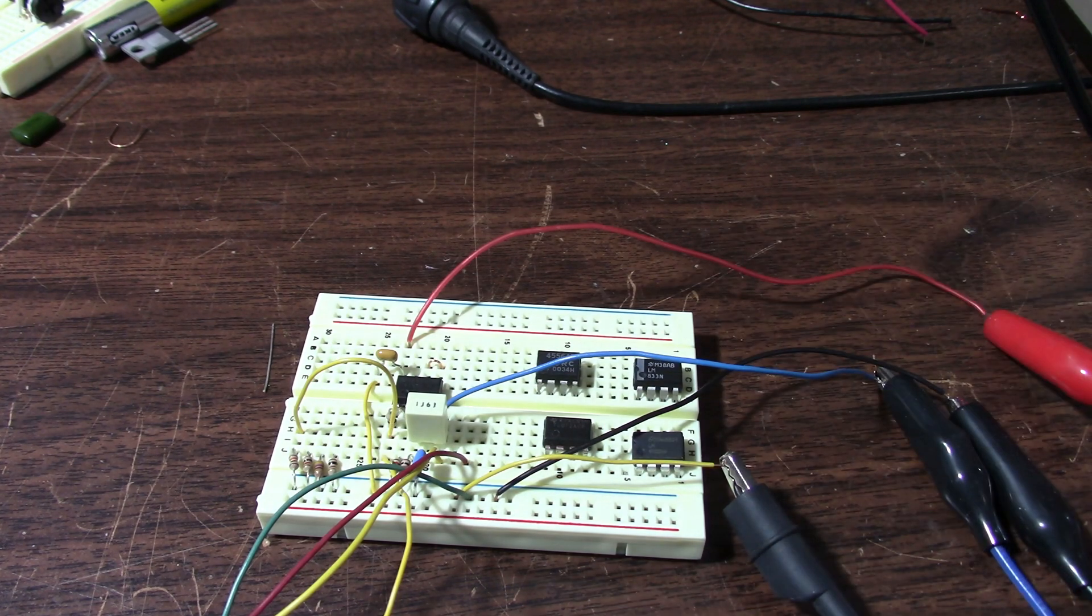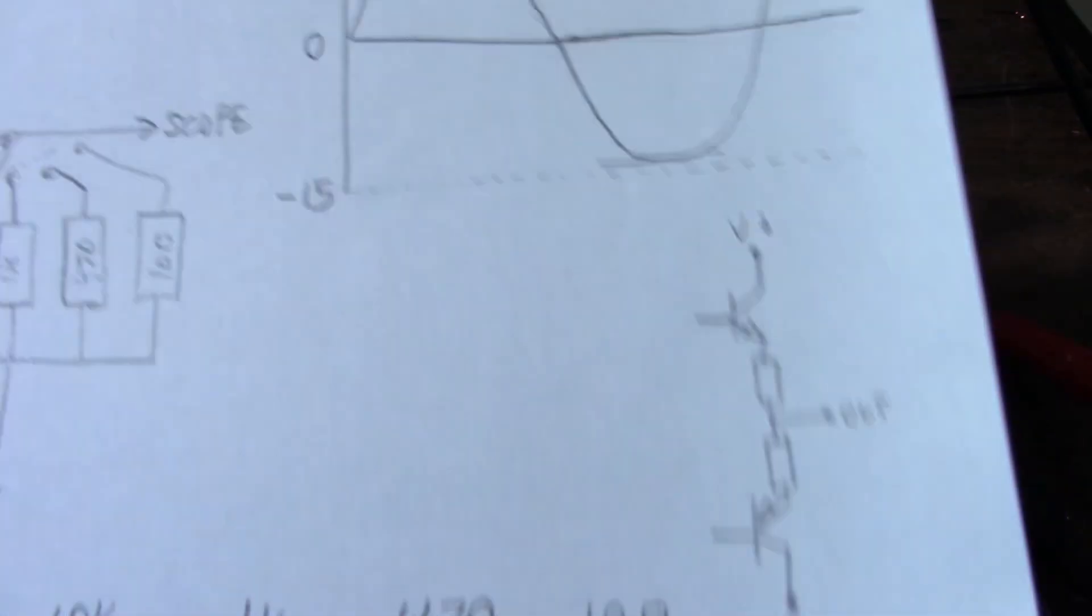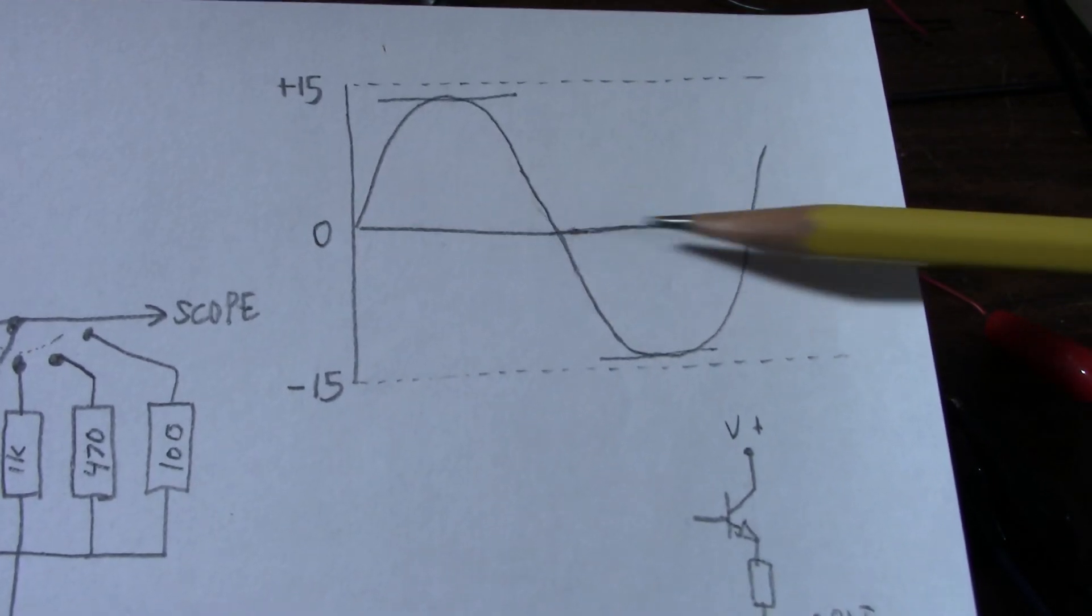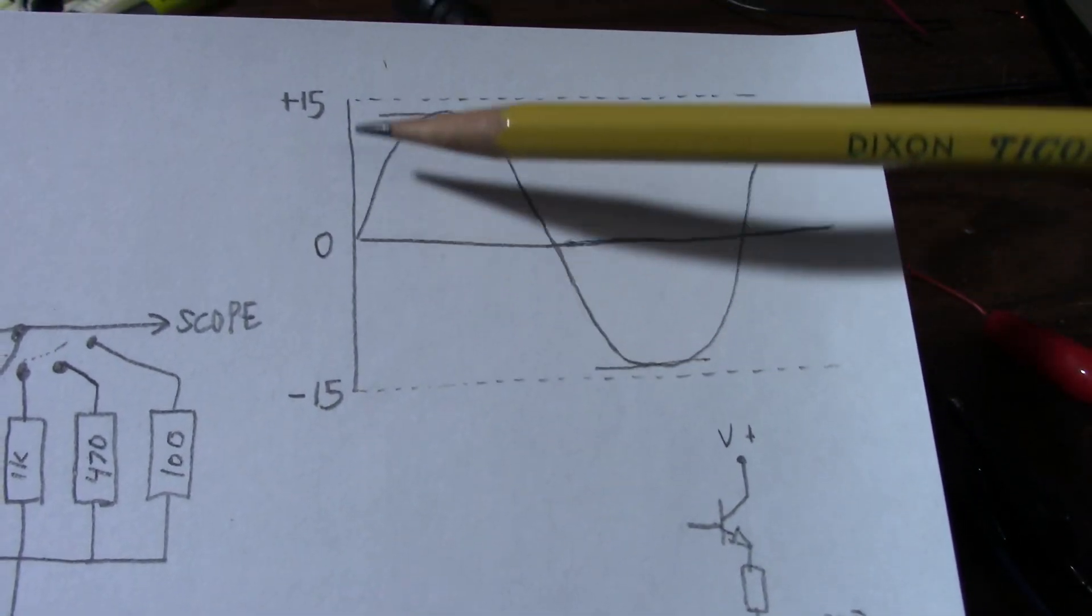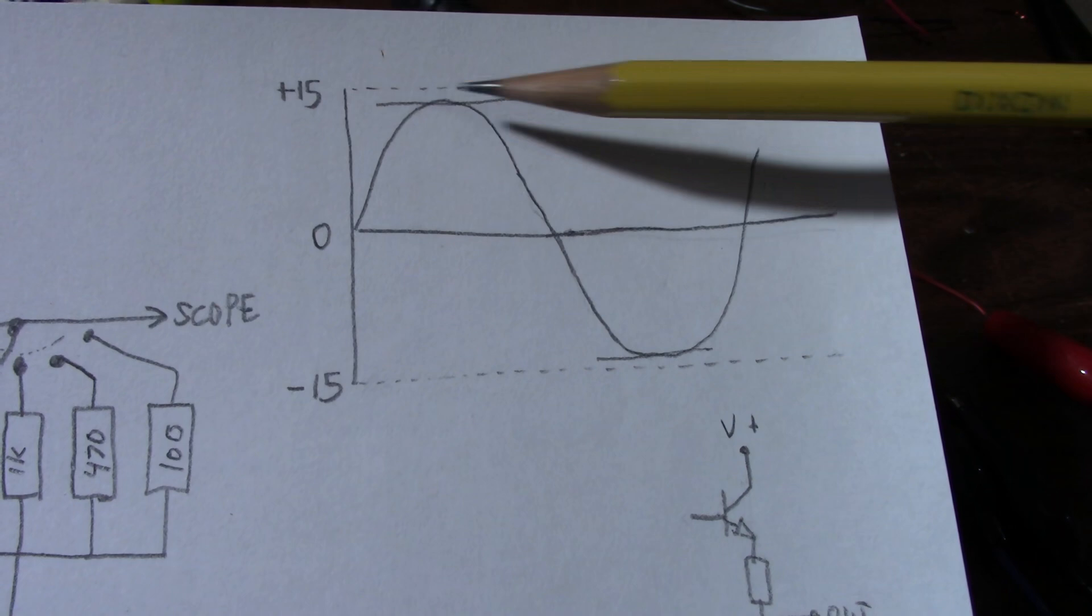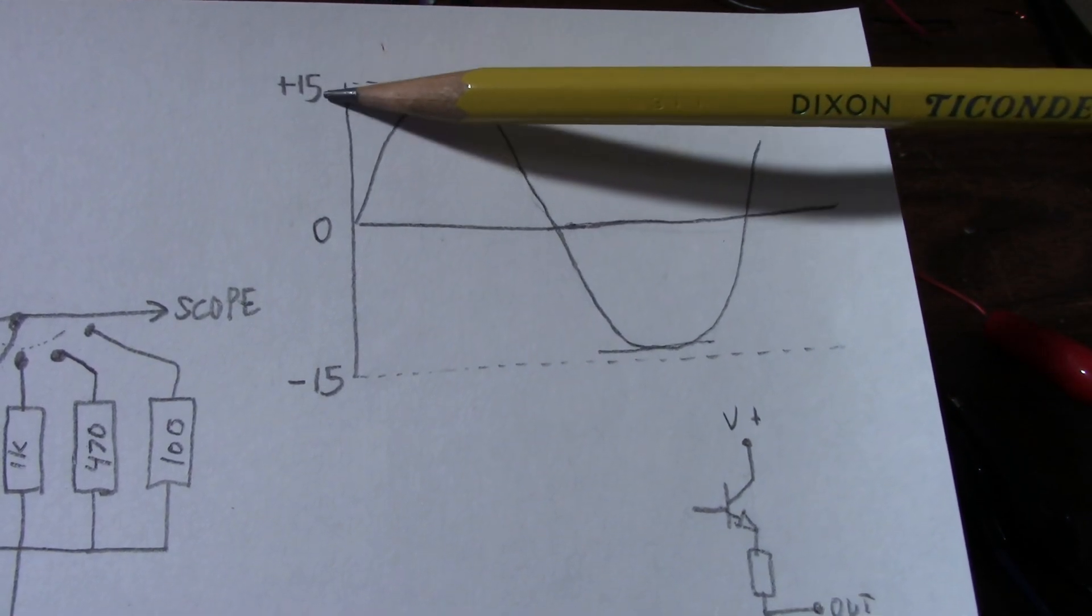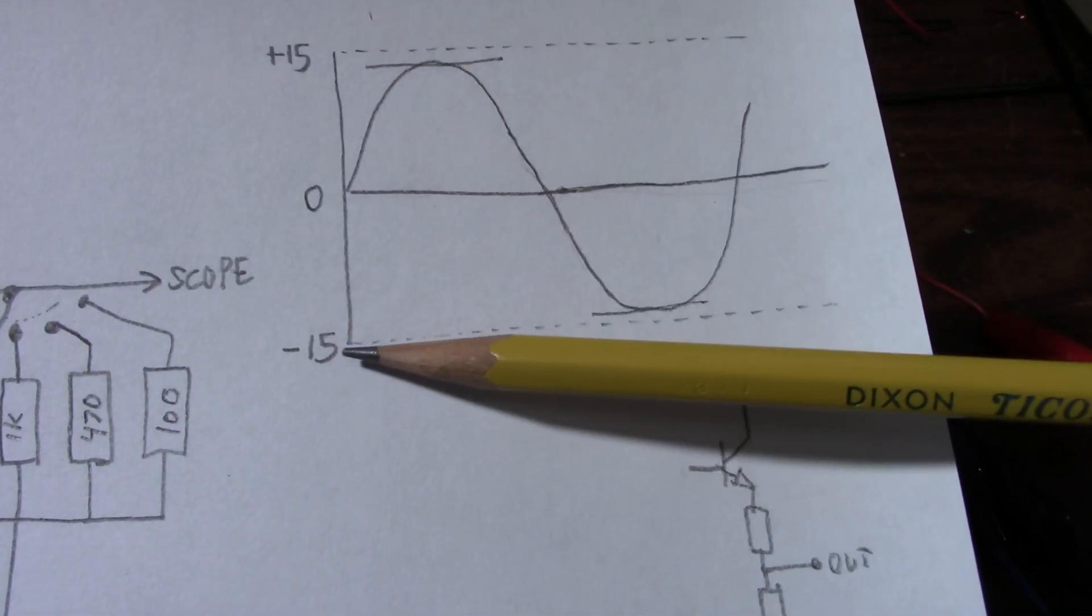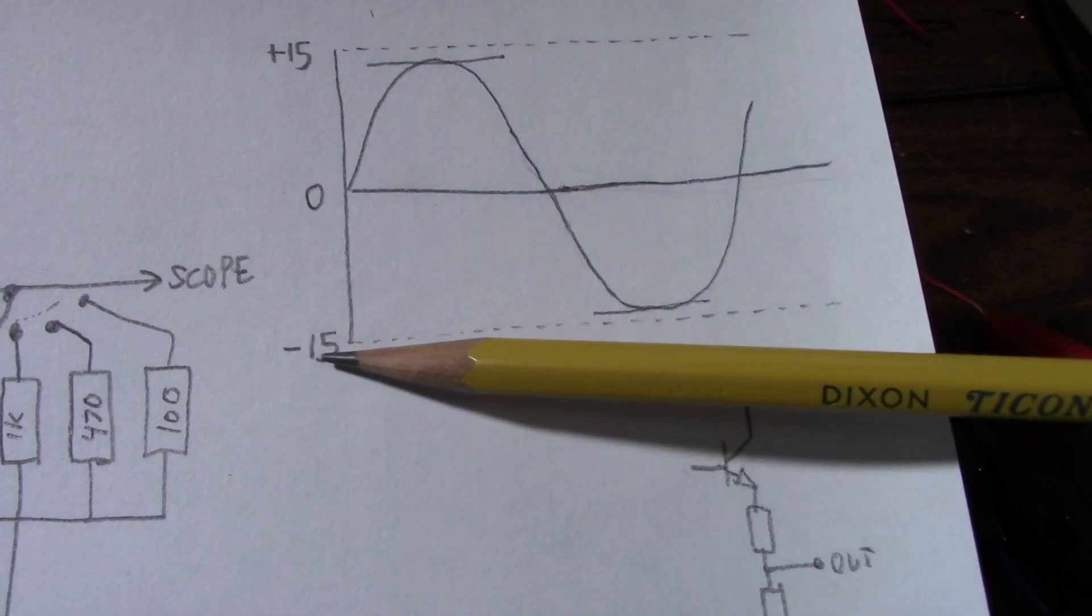So what is the output swing? Well, I drew this little graph here. This dotted line represents the positive supply voltage, 15 volts, and this one is the negative 15 volt supply rail. The sine wave in here, the sine wave can go up to a certain amount, to a certain peak before it clips.